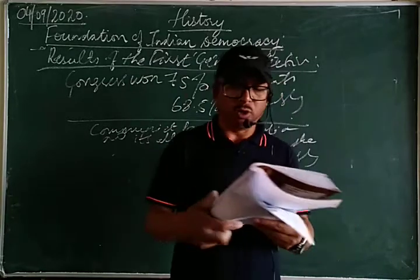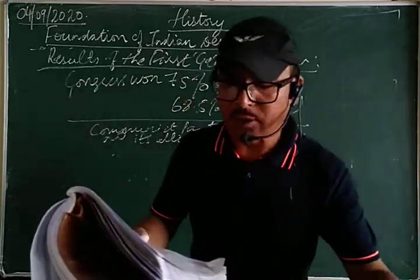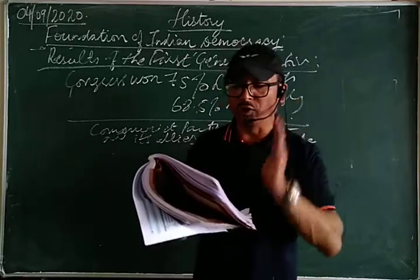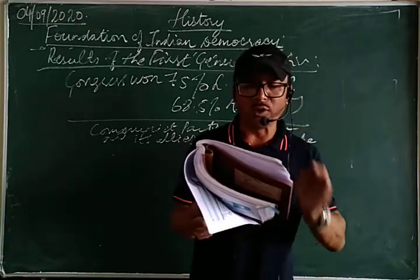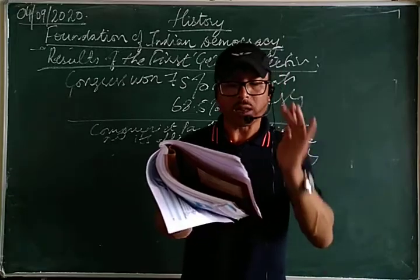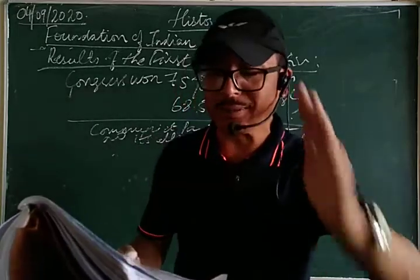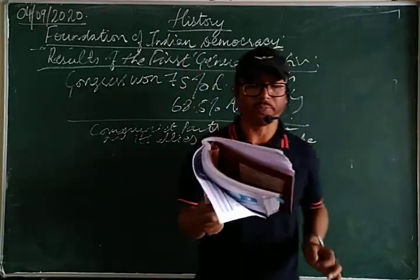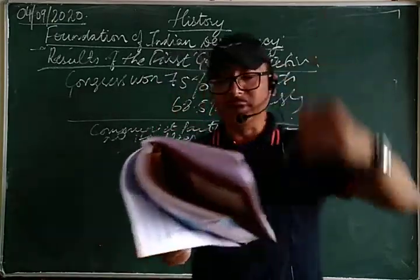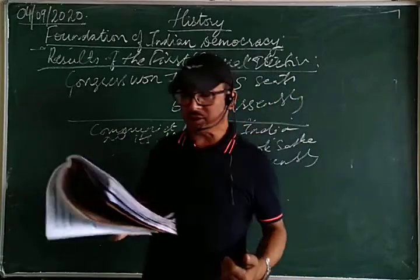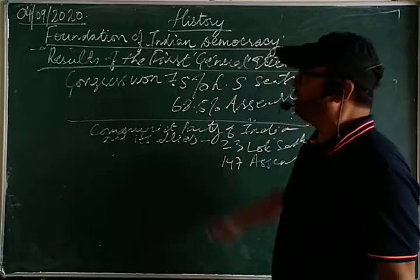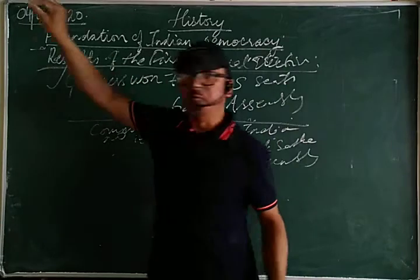The performance of rightist parties was not good. Jan Sangh, Hindu Mahasabha, and Ram Rajya Parishad won only 10 Lok Sabha seats, receiving only 6% of the total votes polled. Apart from these parties, some former royals and big landlords did well in some parts of the country.